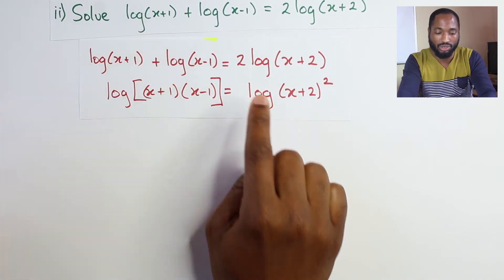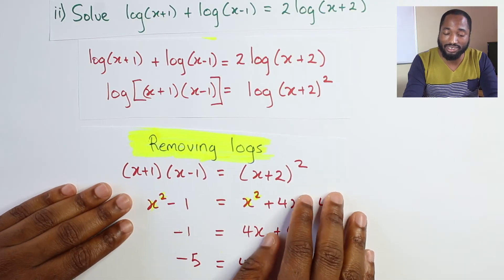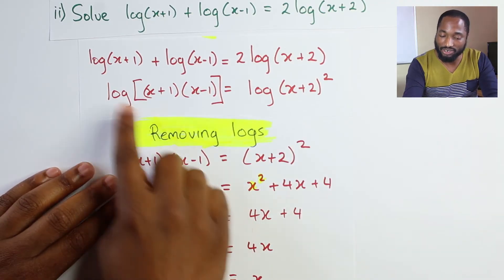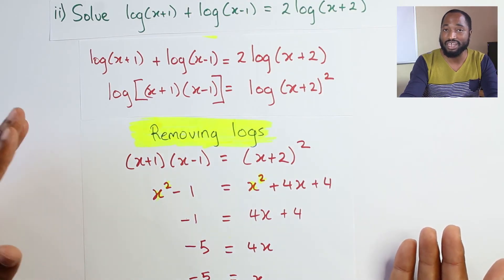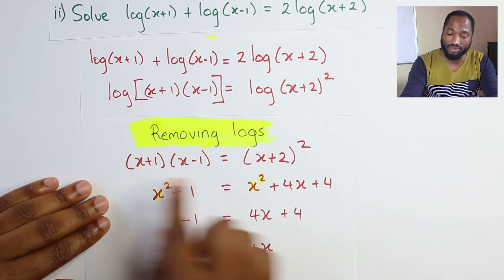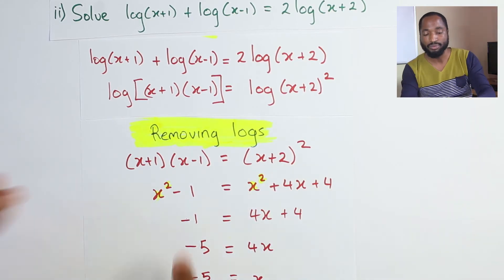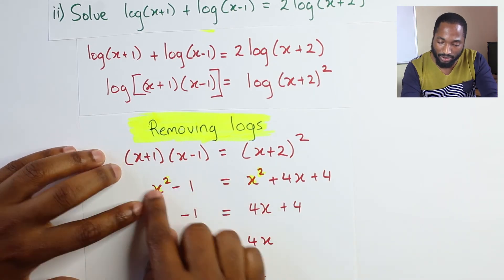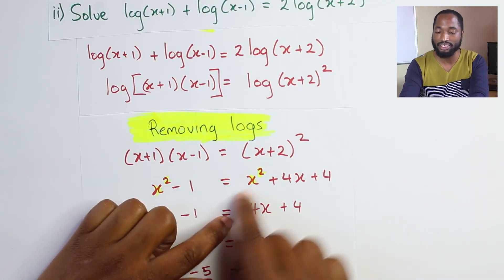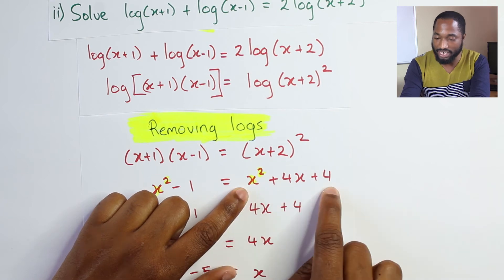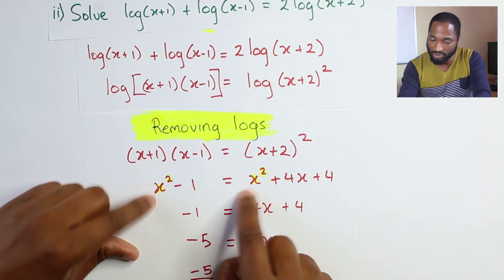Last time you were sticking logs, now we're removing logs. I can just remove the log and now I end up with (x+1)(x-1) = (x+2)^2. This is just algebra. X plus one multiply by x minus one - that's the difference of two squares, so x^2 - 1. This is a perfect square here, multiply all that you get x^2 + 4x + 4.